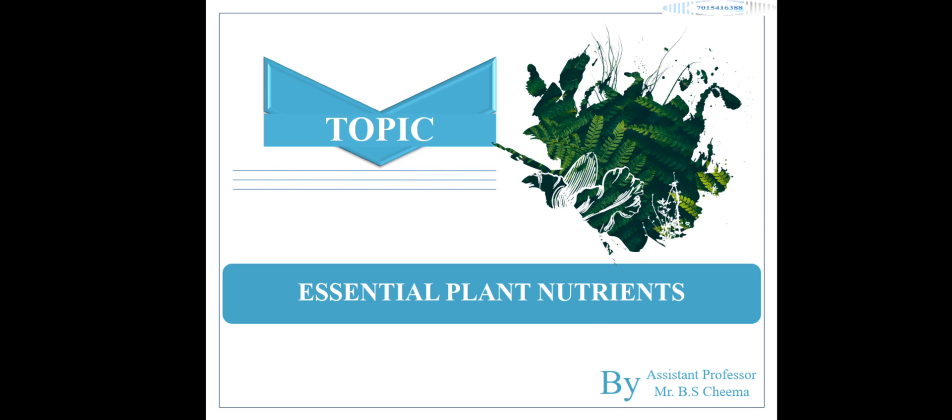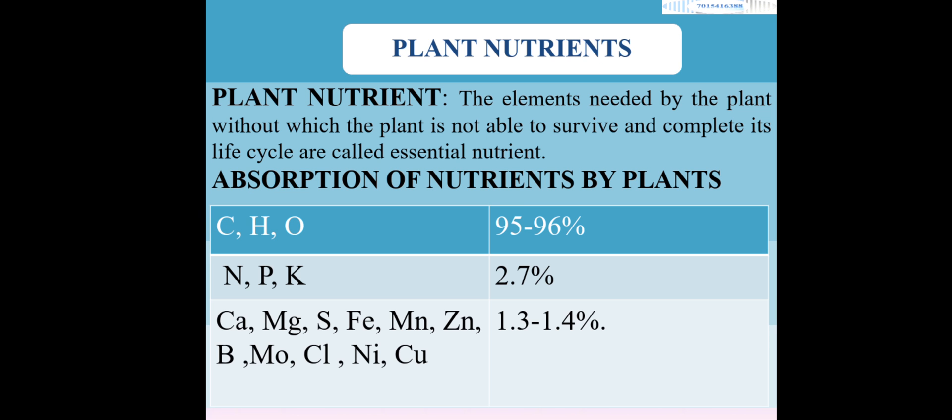Hello everyone, this is Assistant Professor DS Tima. Today we are going to discuss essential plant nutrients. Plant nutrients are the elements needed by the plant without which it cannot survive or complete its life cycle. Basically, nutrients are the elements required by the plant for growth, development, production, survival, and completing the life cycle.